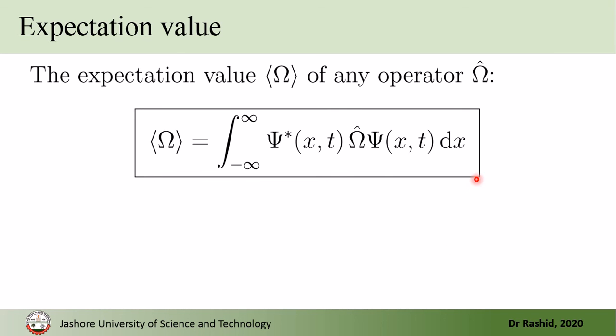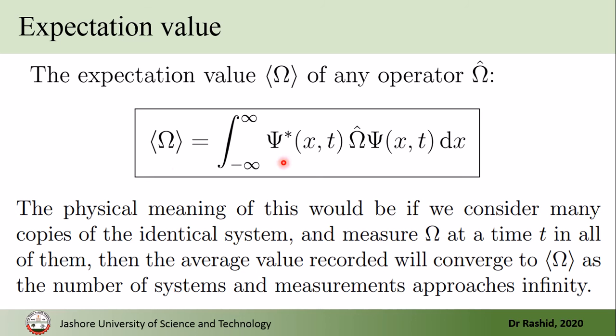Here, we define the expectation value of omega-hat as this, written with angle brackets on both sides. The physical meaning is: if we have many identical systems and we measure omega in all of them at the same time t, then the average value would be this expectation value. From the right-hand side, we see that the expectation value of omega may depend on time, so we like to study its time dependency.